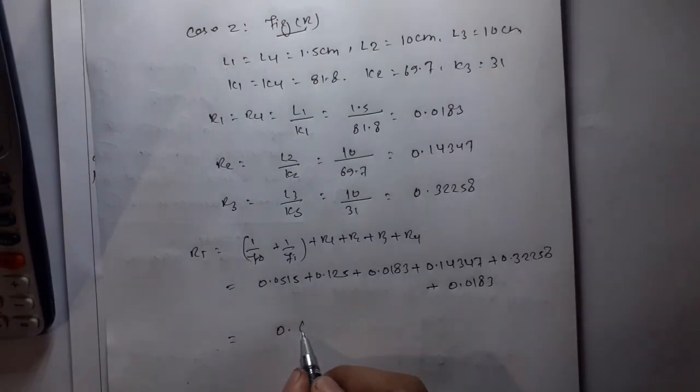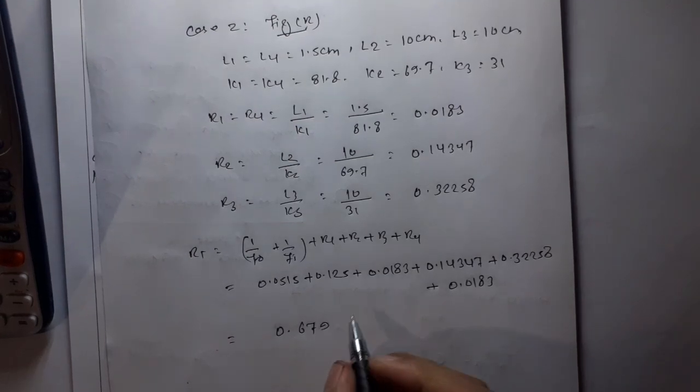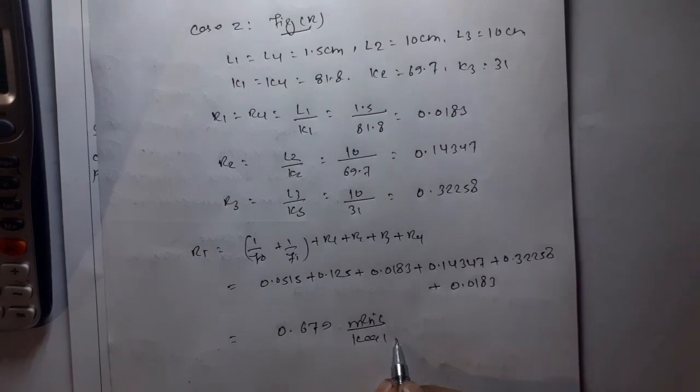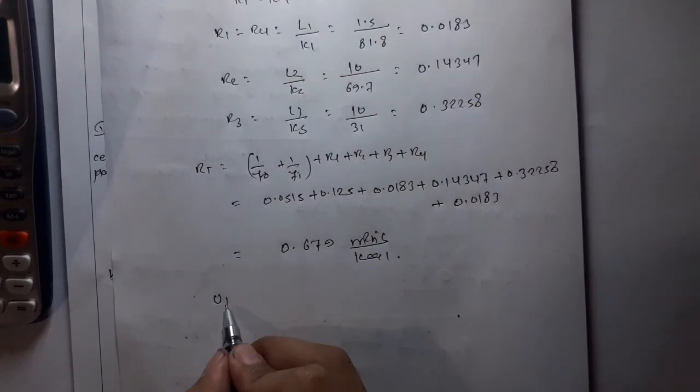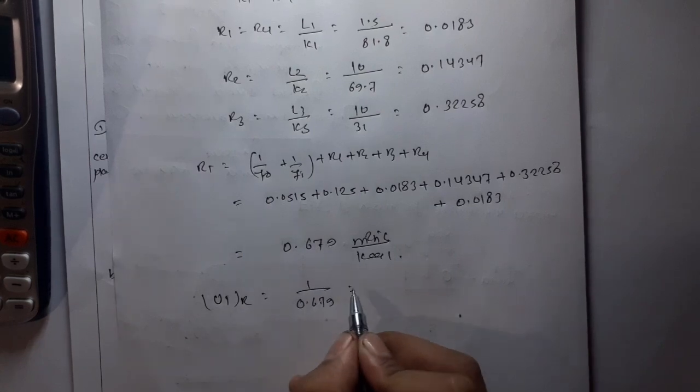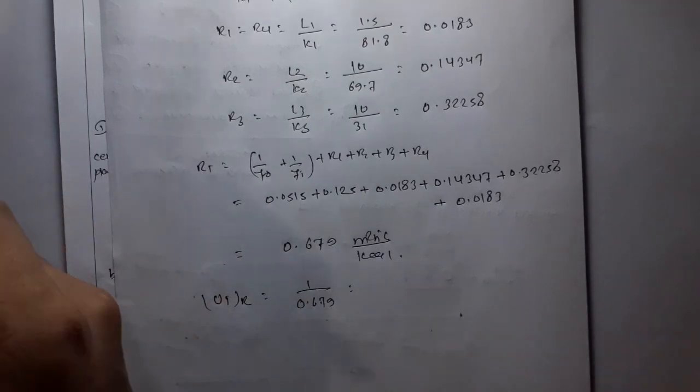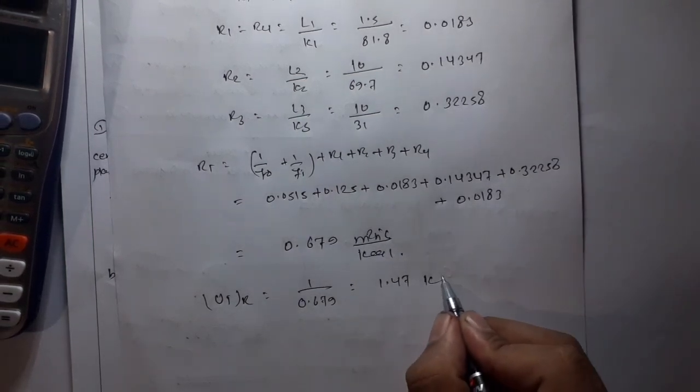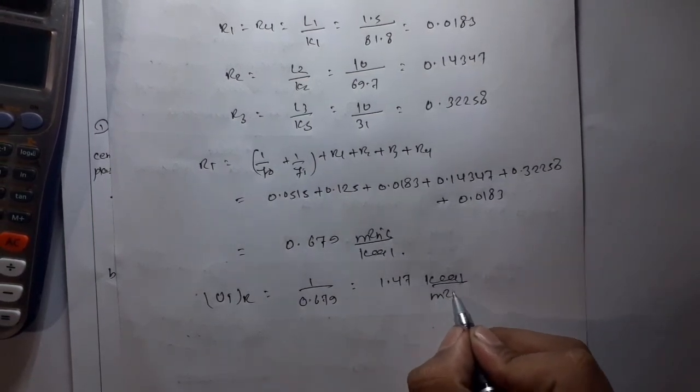This equals 0.679. U2 is one upon 0.679, which equals 1.47 kilocalories per meter square per degree centigrade.